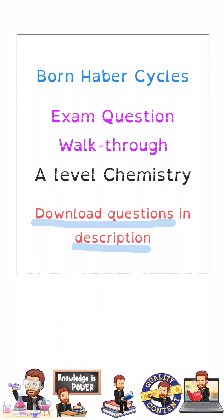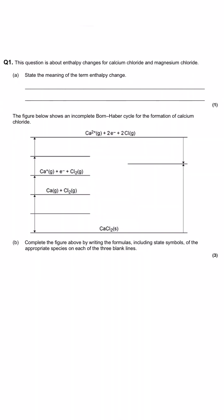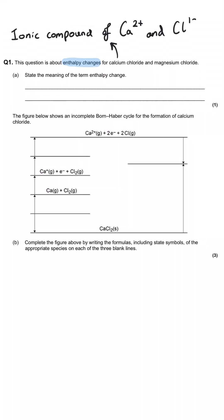I'll do lots of annotations for the thinking behind the question in blue, and what will get you the actual marks will be written in purple. This question is about enthalpy changes for calcium chloride and magnesium chloride.